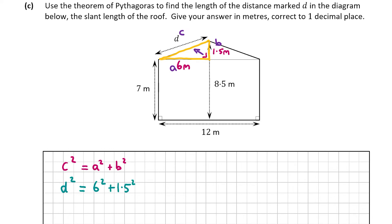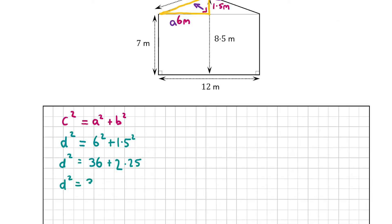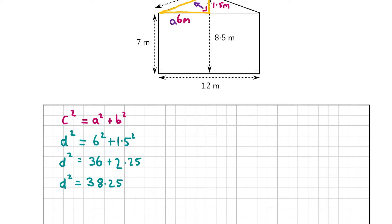So 6 squared is 36 and 1.5 squared is 9 over 4, or 2.25. That gives us d² = 36 + 2.25 = 38.25. We don't want d squared — we just want d. To get rid of the squared, we square root the right-hand side. Think of the square root as the inverse of squaring: for example, 4 squared is 16, and the square root of 16 brings you back to 4.